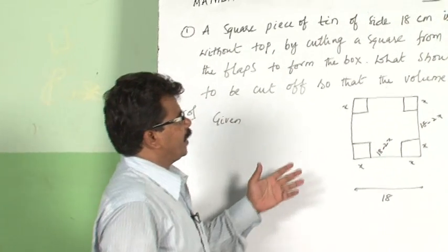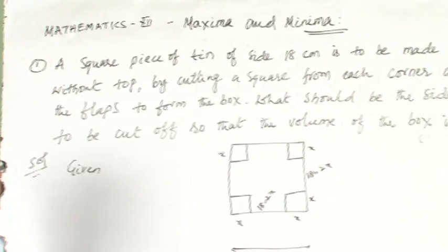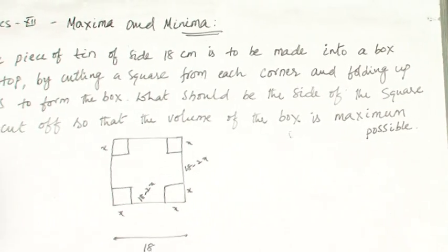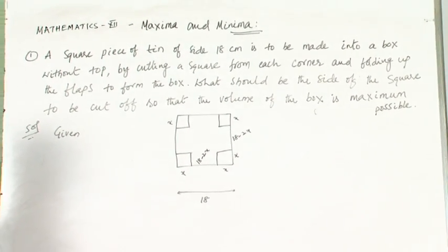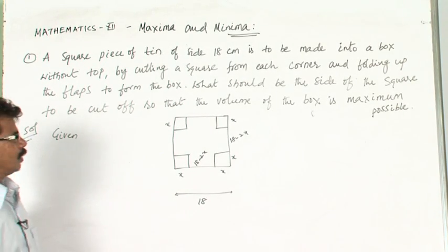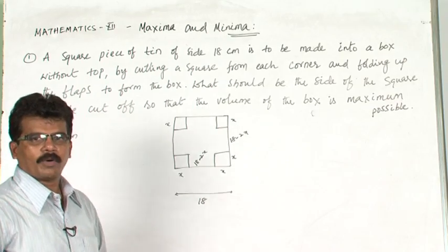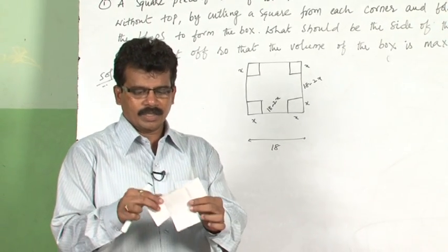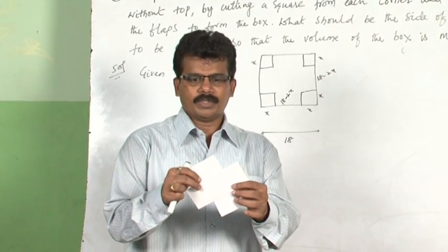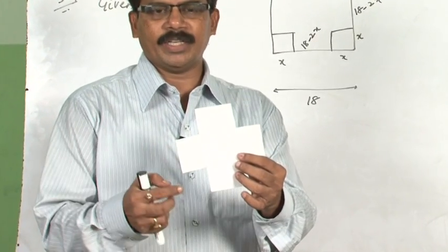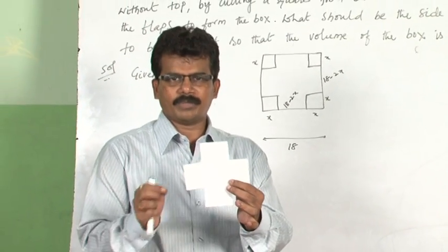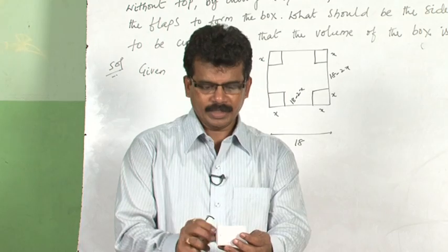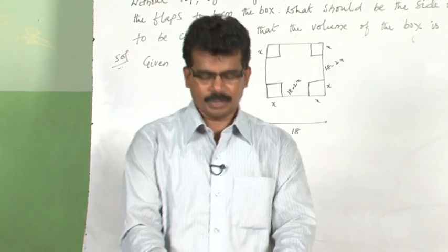A square piece of tin sheet of side 18 centimeters is to be made into a box without a top by cutting a square from each corner and folding up the flaps to form a box. What should be the side of the square to be cut off so that the volume of the box is maximum?